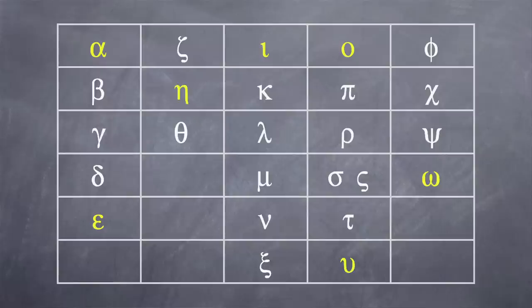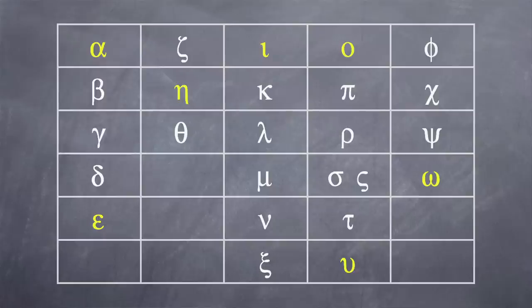You should have been filling out your chart and all the squares should be filled in by now. Let's walk through the full alphabet again out loud: alpha, beta, gamma, delta, epsilon — zeta, eta, theta — iota, kappa, lambda, mu, nu, xi — omicron, pi, rho, sigma, tau, upsilon — phi, chi, psi, omega.